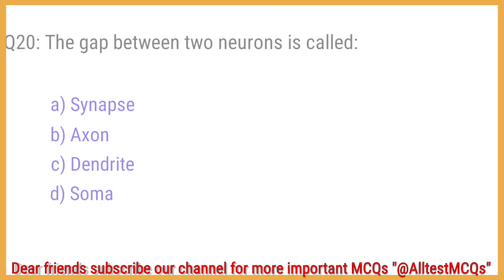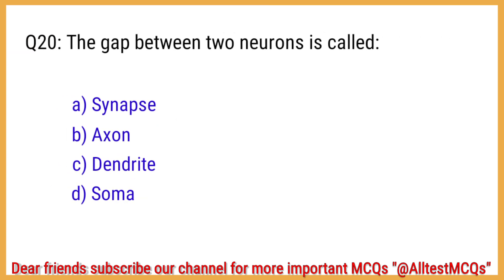Q20. The gap between two neurons is called? The right answer is option A: Synapse.